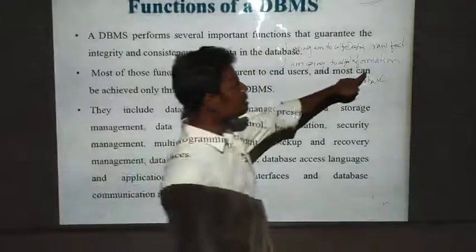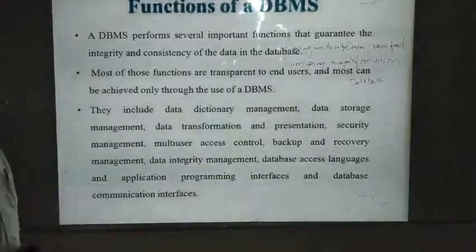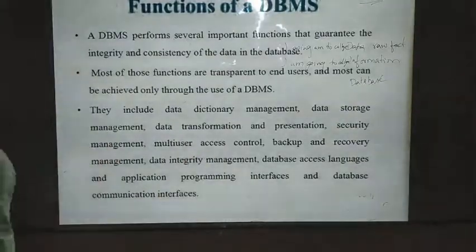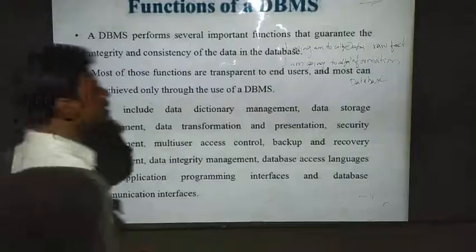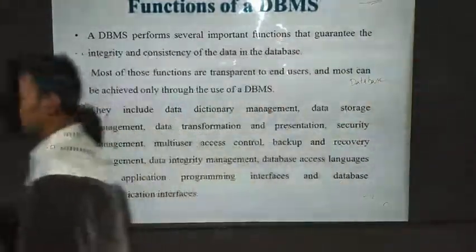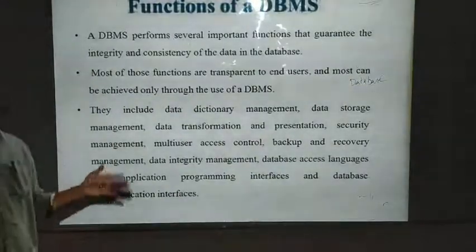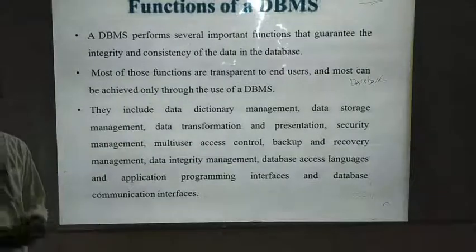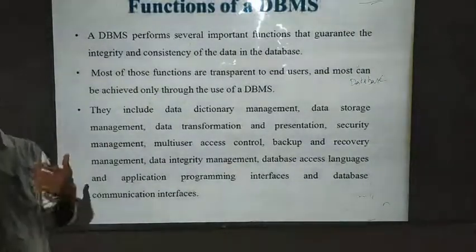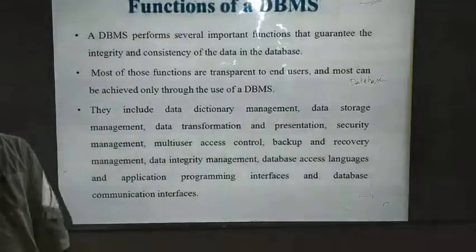That is the reason we say that information is nothing but processed data. Now, when we go for the database — database is nothing but a collection of interrelated data. For example, consider a student database: you will have information related to the student, like student number, student name, student ID, student mark, student grade — everything related to your student. That is why we call it a database.